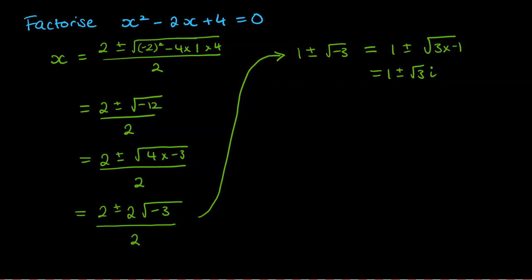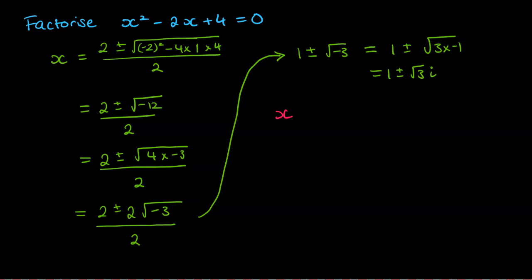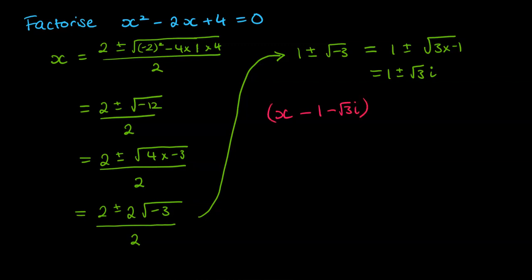But once we've got the roots, we can put it into factorized form. So if we want to factorize x squared minus 2x plus 4, we do x minus one of the roots, multiplied by x minus the other root, and that would give us the equation we started off with but in factorized form. So here we've got x minus the first root, x minus the second root in brackets, multiplied together, is equal to 0.